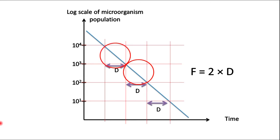So if you want to reduce the microbial population from 10 to the power 4 to 10 to the power 1, then we have F value equal to 2 log cycles.